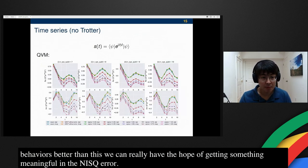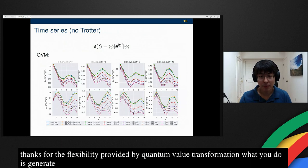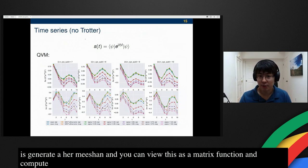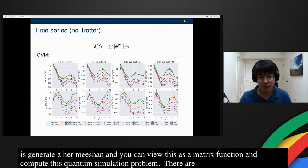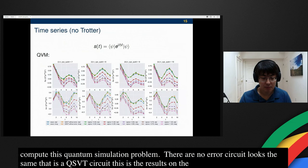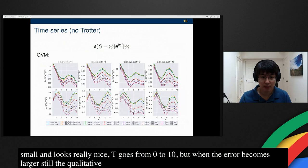You can use it to do time series analysis, also thanks to the flexibility provided by quantum singular value transformation. What you do is you generate a Hermitianized RACBEM here called H, and you can view this as a matrix function, and you compute this quantum simulation problem. The important thing is there is no Trotter whatsoever going on here. Every circuit looks like the same, which is what we showed before, that's the QSVT circuit. This is the results on the QVM. Again, if the error becomes small it looks really nice, T goes from zero to ten, but when the error becomes larger still, the qualitative shape seems to be preserved, but the error is very non-negligible.